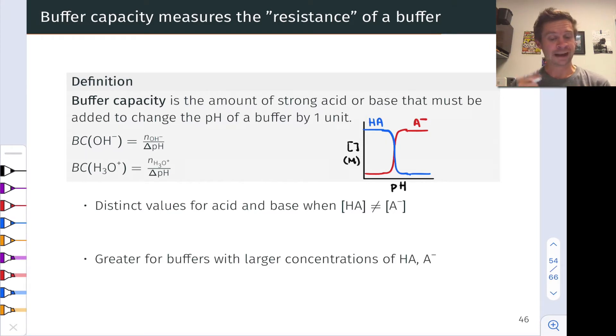We can define buffer capacity for both acid and base, depending on whether we're adding hydroxide or hydronium. To give us a sense of what these definitions really mean, let's return to this graph of the concentration of weak acid and conjugate base as a function of pH.